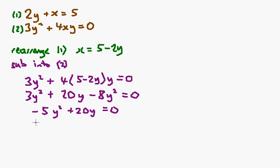Let's divide through by minus 5, just to smarten things up a bit. So, we get y squared, take away 4y is equal to 0. And now I can factorize, no need to use the quadratic formula here.